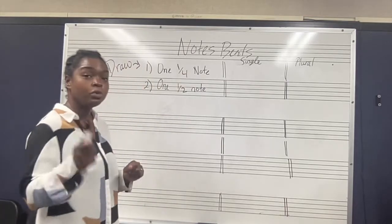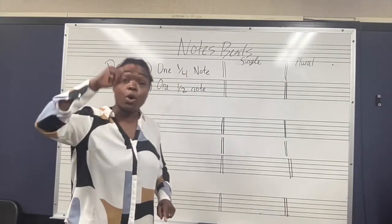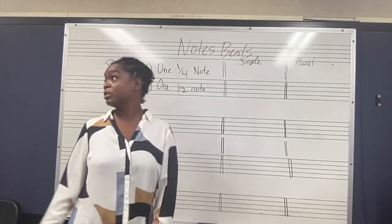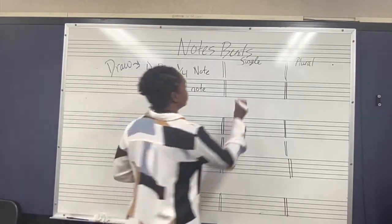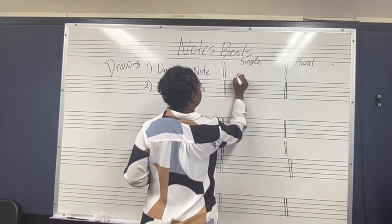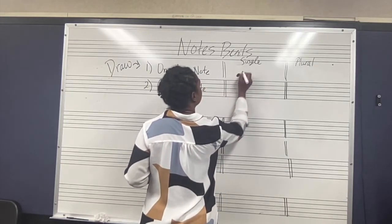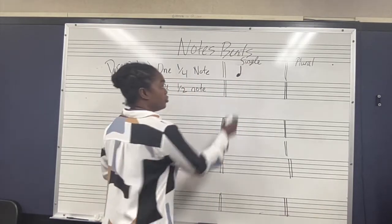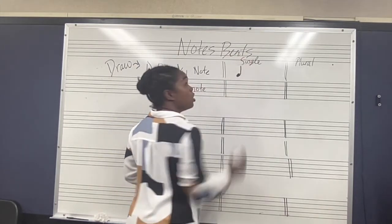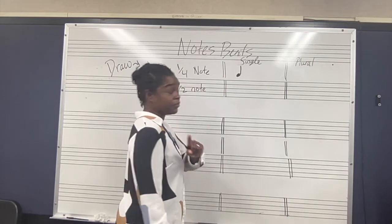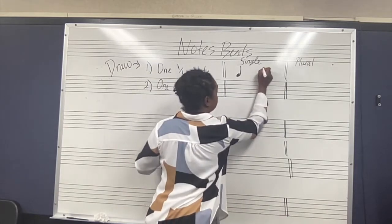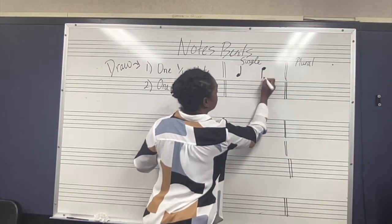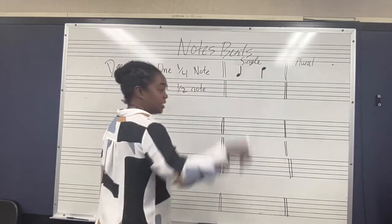So if I were to simply write one quarter note, what does that look like? It's simply going to be a filled-in head, a stem, and do we need to put a flag? No, no flag for the quarter note. If the note is higher, we're just going to put the stem going down.